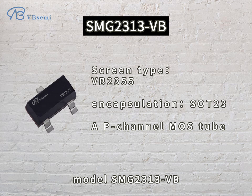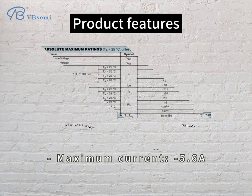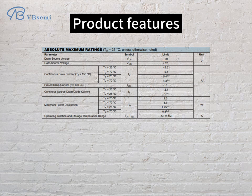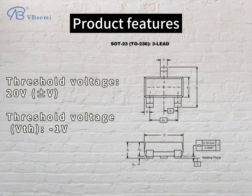Model SMG2313VB. Product features: Maximum Voltage -30V, Maximum Current 5.6A, Threshold Voltage VTH: -1V.